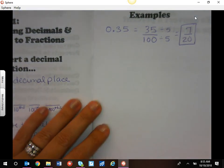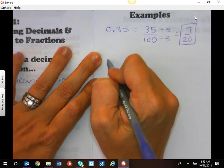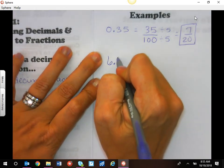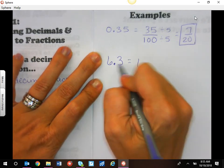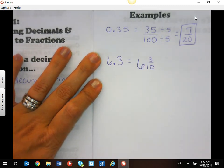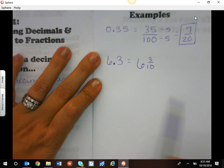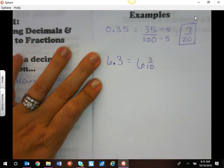We can also do this with a mixed number. Six decimal three is six wholes, and we say this three tenths. You know that three tenths does not simplify, so we say that's six and three tenths, which we can also write as a fraction.